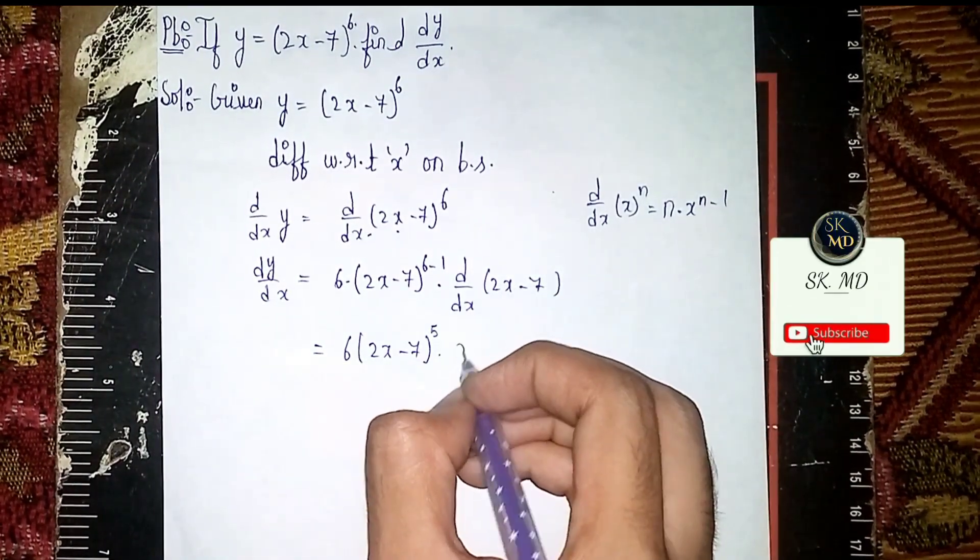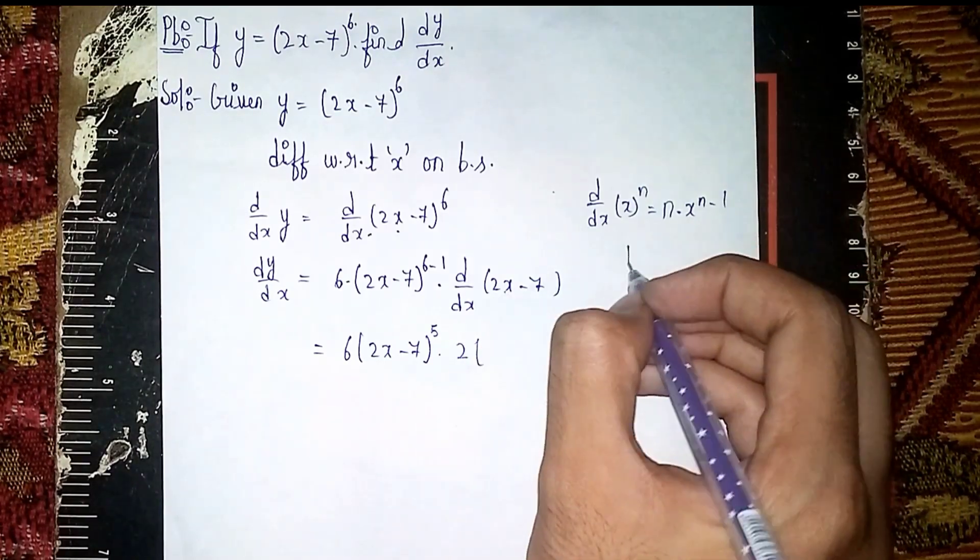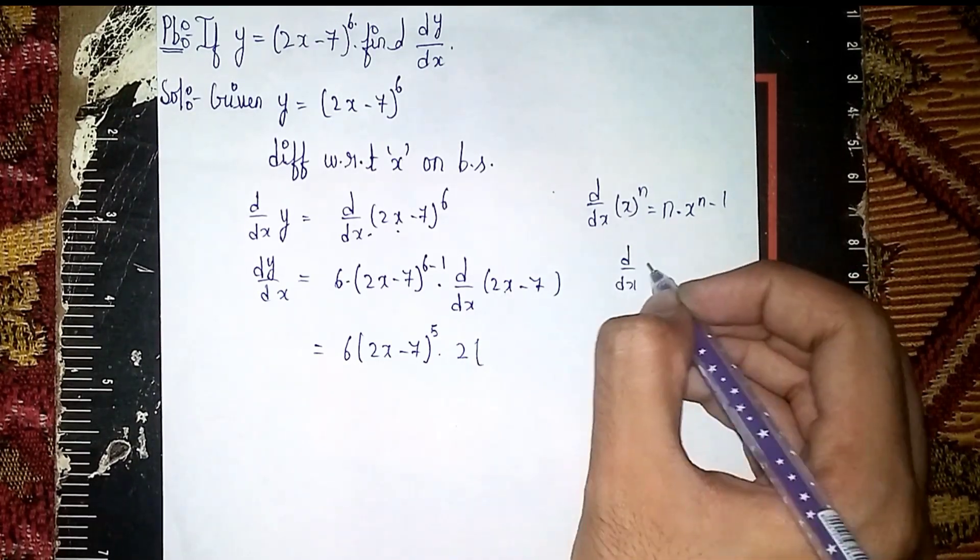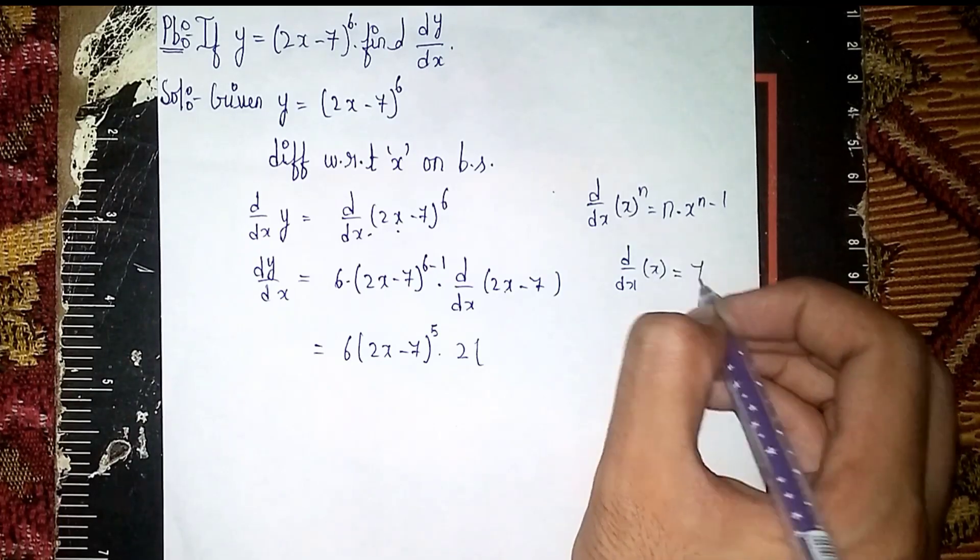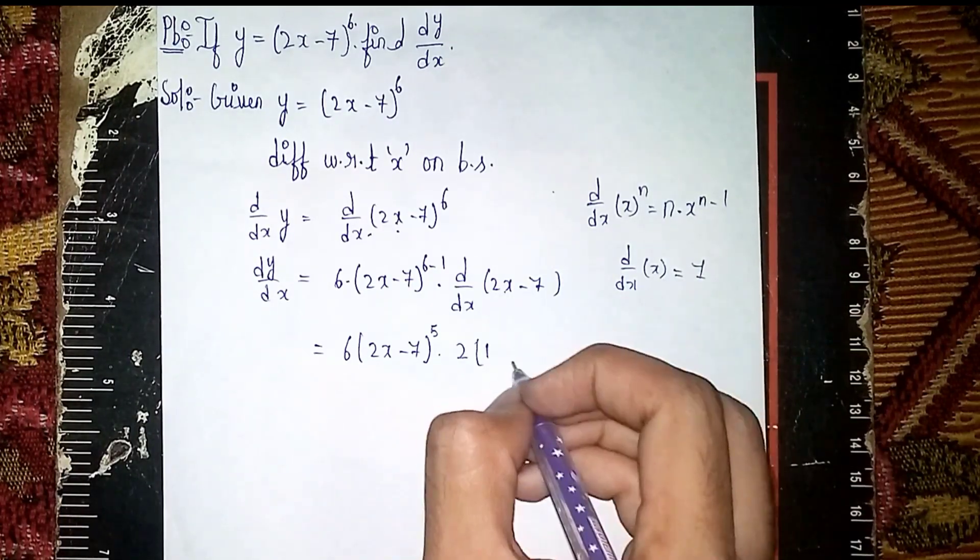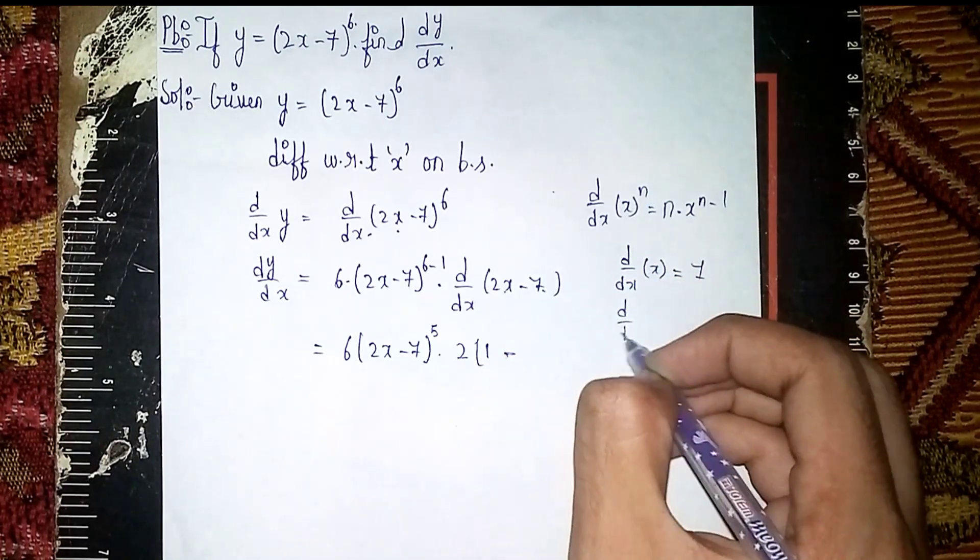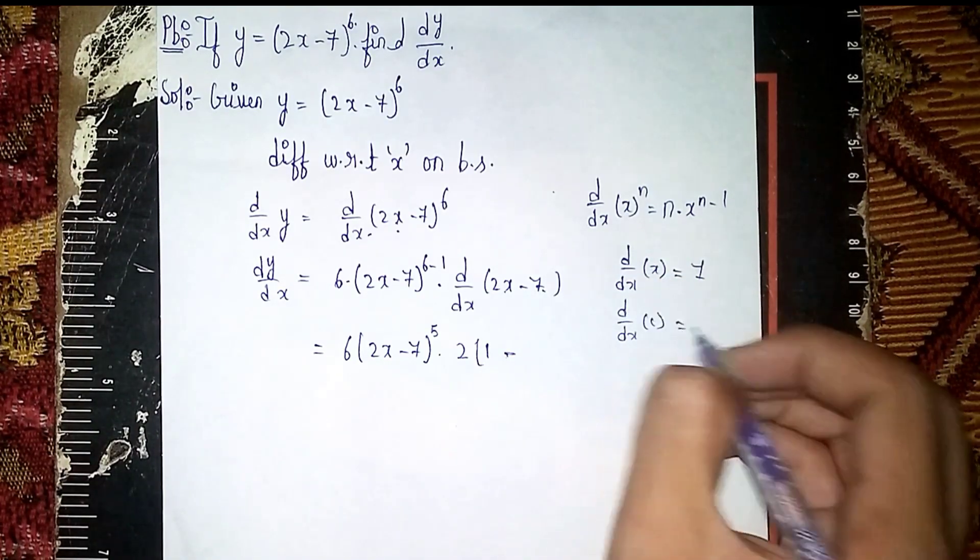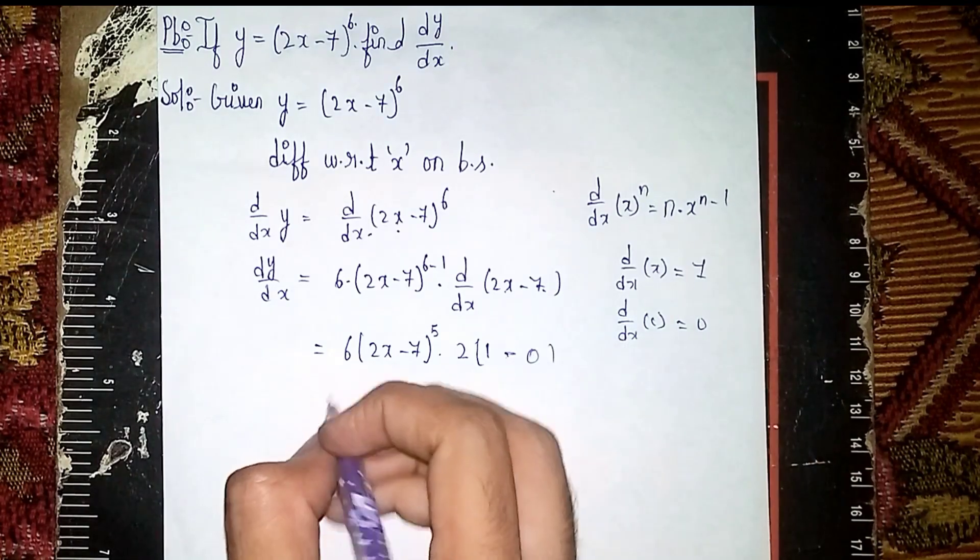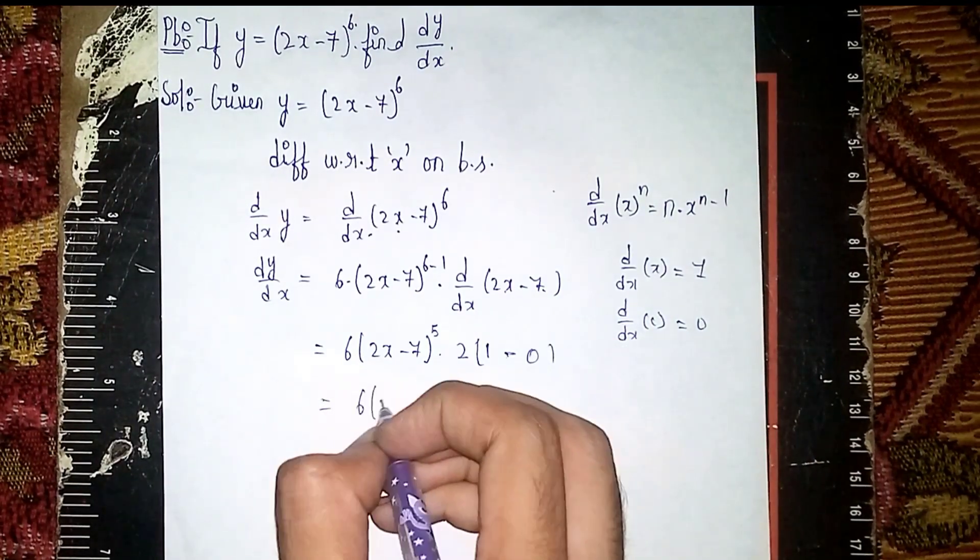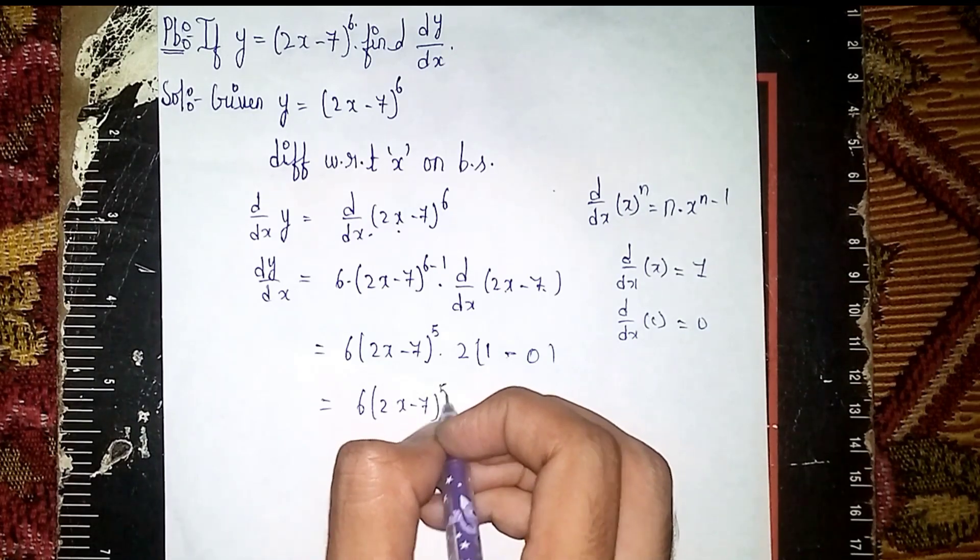Now d/dx of 2x: d/dx of x is equal to 1, so 2·1, then minus - d/dx of constant 7 is equal to 0. So we have 6·(2x - 7)^5.